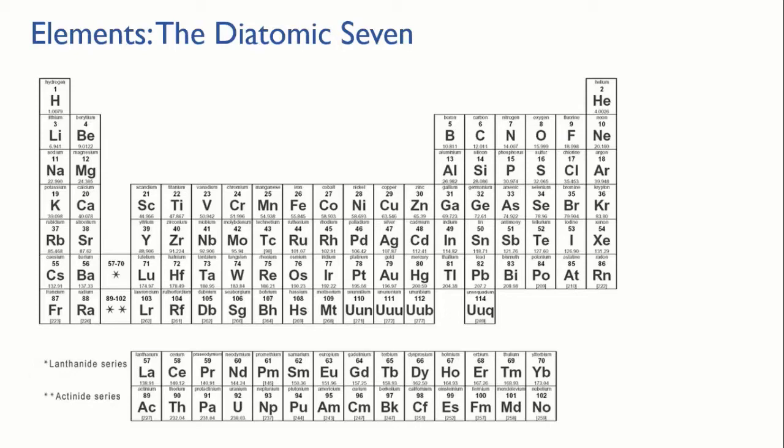However, there are seven elements that are an exception to this rule because they always hang around as molecules rather than individual atoms. All seven of them form diatomic molecules—two atoms, diatomic—two atoms joined together.